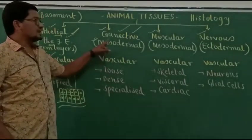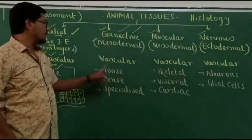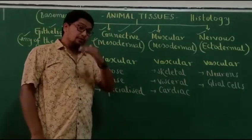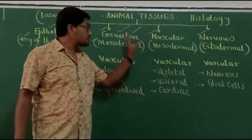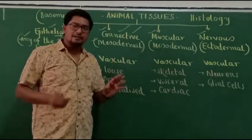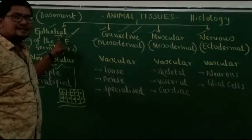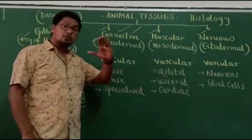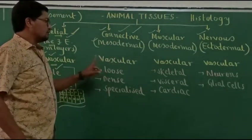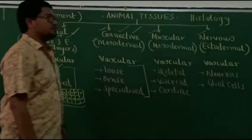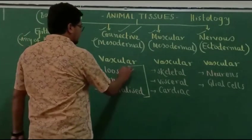Coming to connective tissues: they are mesodermal in origin and richly vascular, meaning every cell has an abundant supply of branches of blood vessels. In connective tissue, the tissue matrix occupies more space compared to the space occupied by the cells — unlike epithelial tissue where matrix is very less. Broadly, connective tissues are of three types: loose connective tissue, dense connective tissue, and specialized connective tissue.